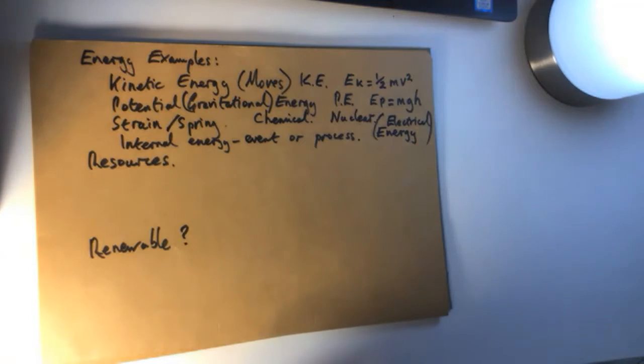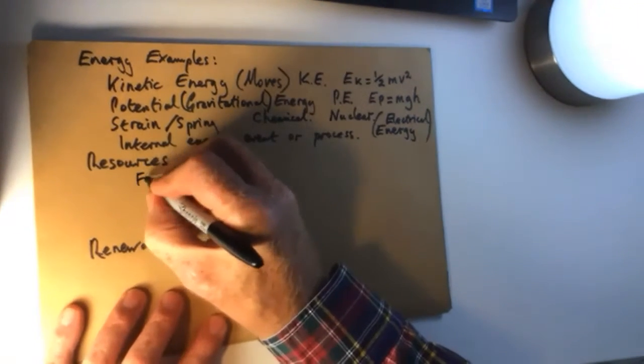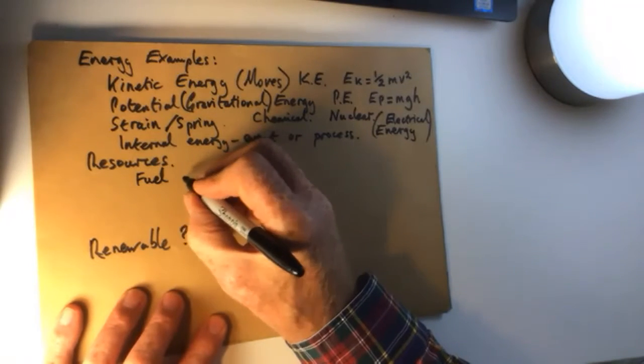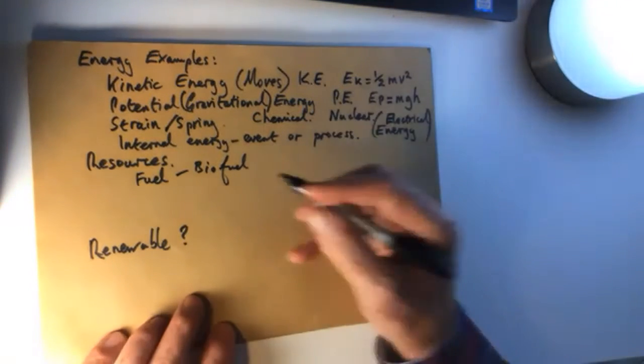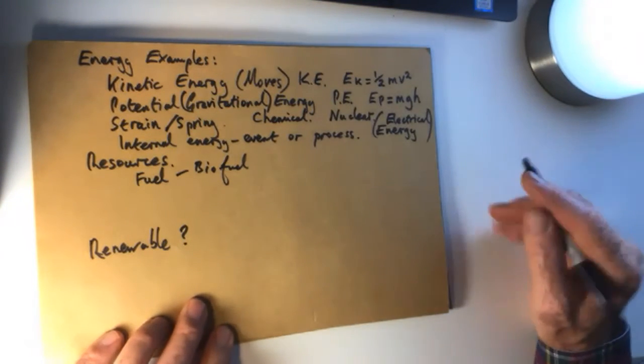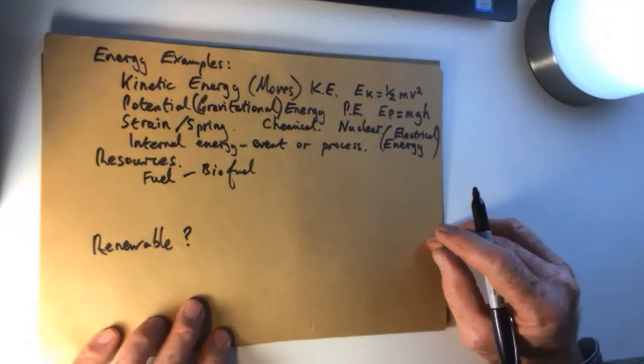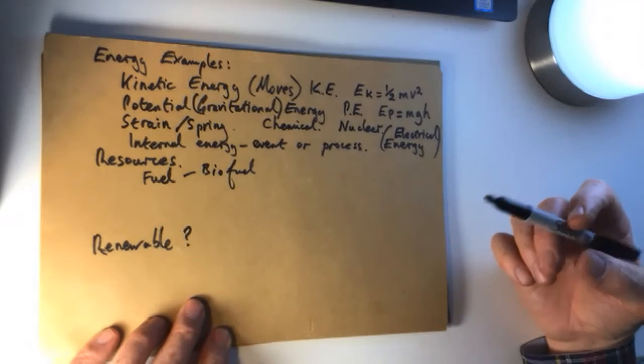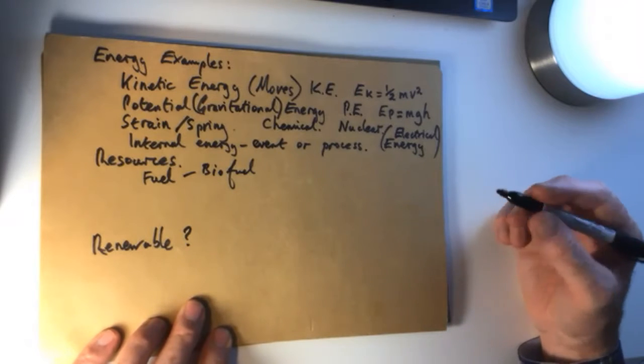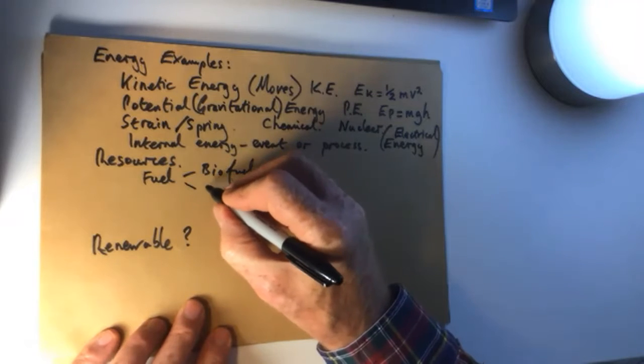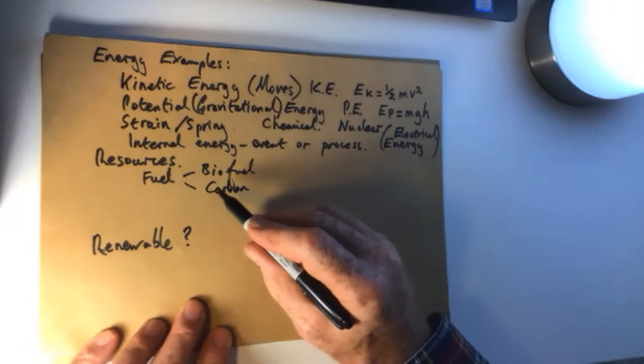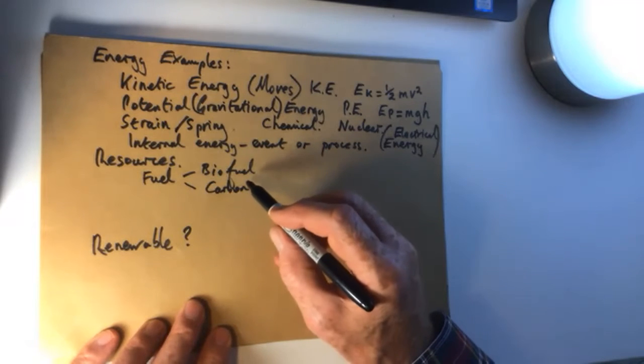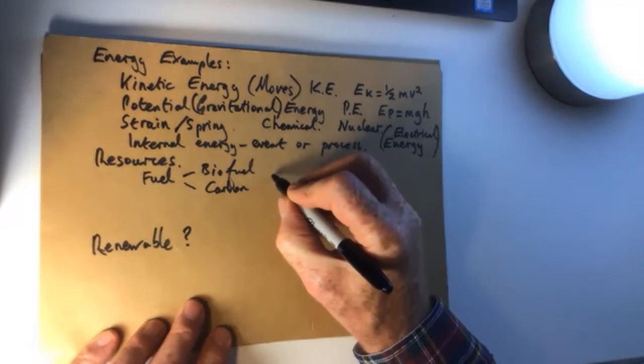Resources. Chemical energy comes from fuel. So fuel is a resource. And we can get biofuel, which is made from things like sugar cane, sugar beet, something in which we grow and then turn into alcohol usually and make ethanol. So we get fuel, which is biofuels, and we get fuels which are carbon based, which are coal and oil, etc. And these types of fuel are grouped together as chemical energy.